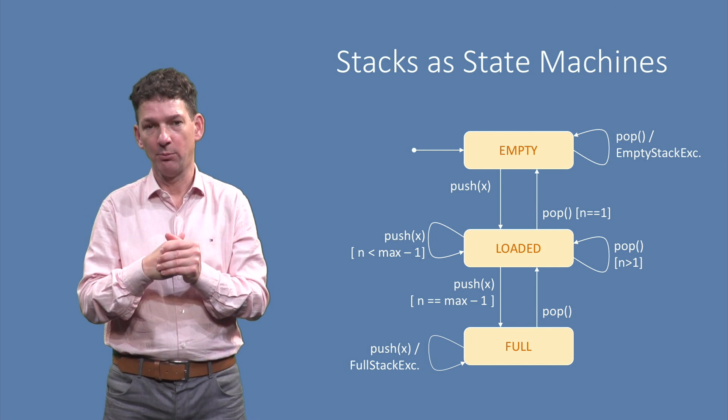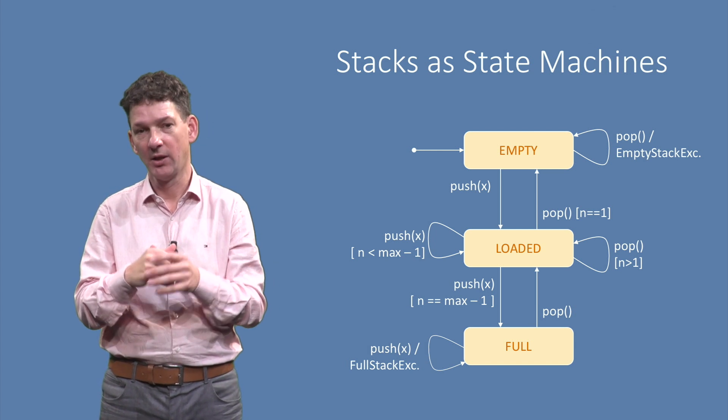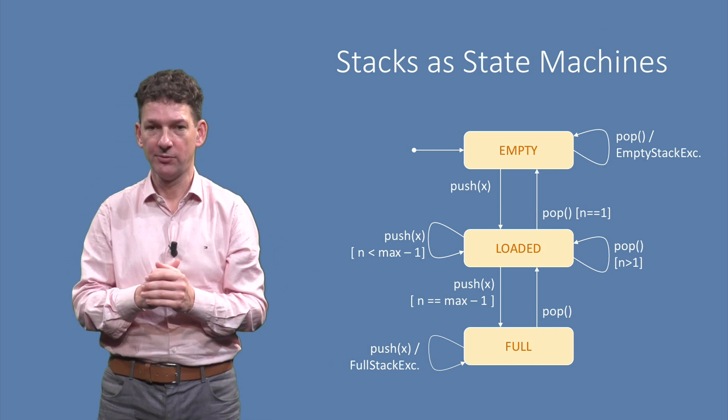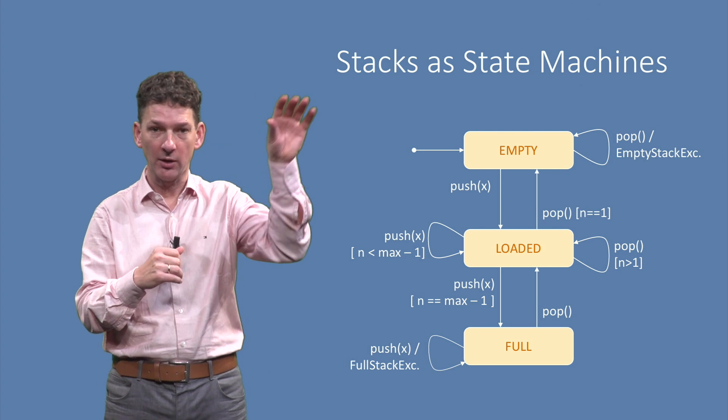This concludes our example of all the basic elements of UML state diagrams. States, which are boxes, transitions, which are arrows, events, that are labels on top of arrows.